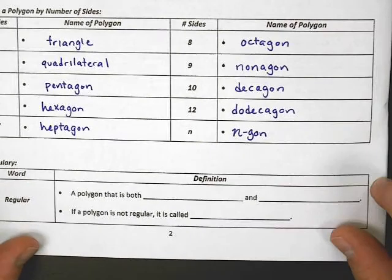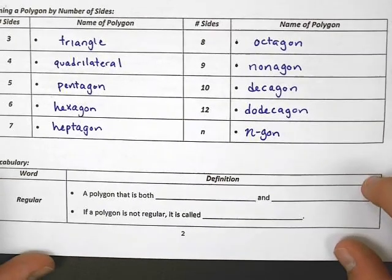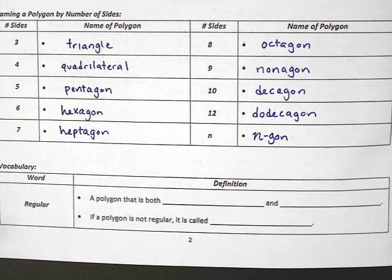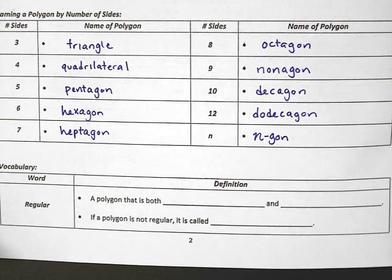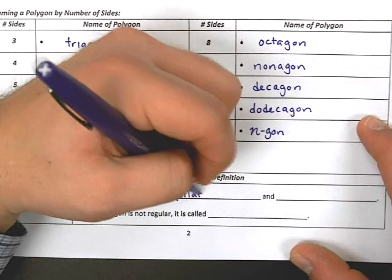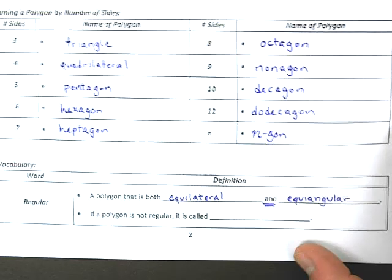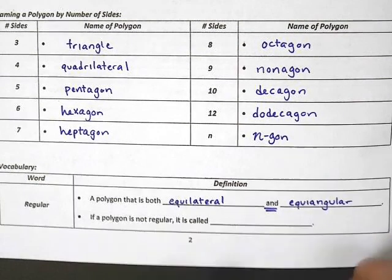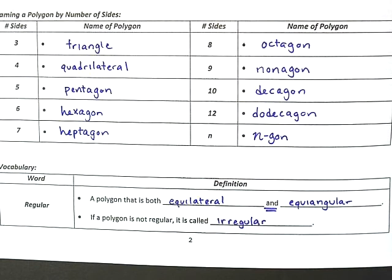This is something that I expect you to know. I expect you to know that a seven-sided figure is a heptagon, and I might quiz you on that. Polygons can be regular or irregular. A polygon is regular if it is both equilateral and equiangular. Please make sure you underline the word 'and' — it has to be both, not one or the other. And if a polygon is not regular, then we call it irregular.